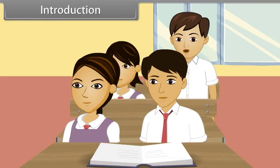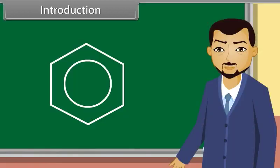Correct, a benzene ring. And now, who will define aromatic hydrocarbons? Sir, aromatic hydrocarbons are those which contain one or more benzene rings. Very good, Rahul. Today, we will learn about aromatic hydrocarbons. Come, let's start.